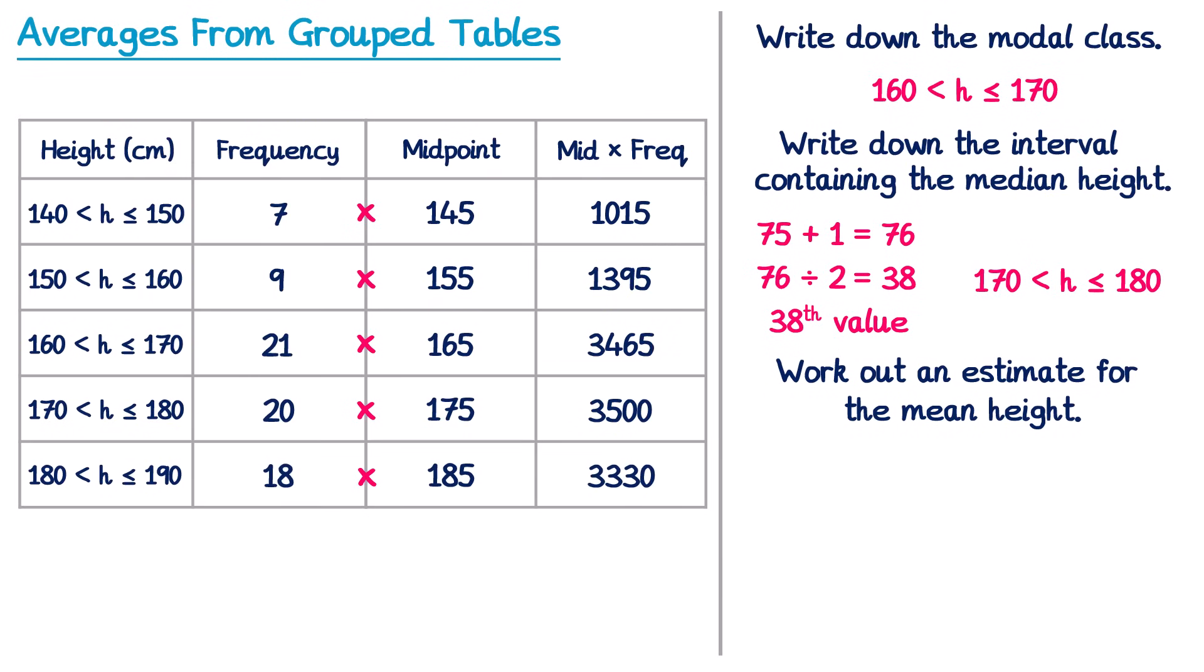These values in the final column represent the total heights of all of the people from those intervals. So if I add up the entire column, I get the total height of every single person there was, and in this one it's 12705 centimeters. Since I'm trying to work out a mean, I need to divide this by how many people there were, and I get this from adding up the frequency column. So if I add up this frequency column I get 75. Notice at no point do we add up the midpoint column. You're always going to add up the midpoint times the frequency and the frequency column.